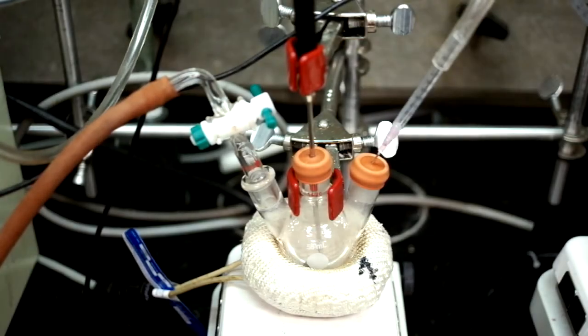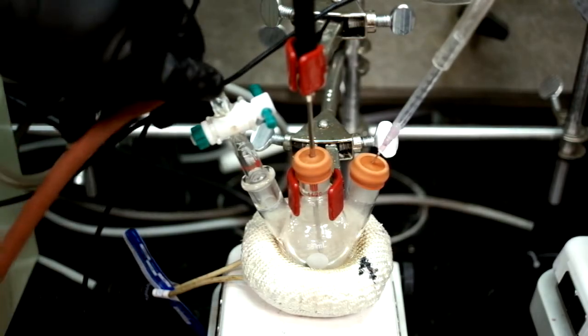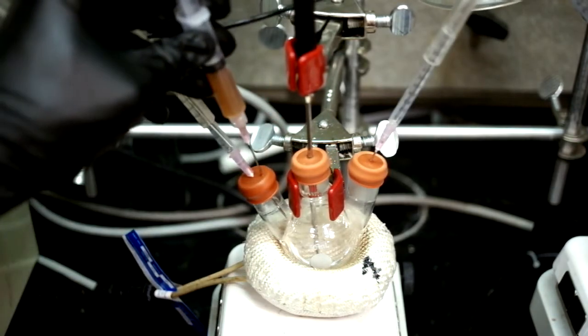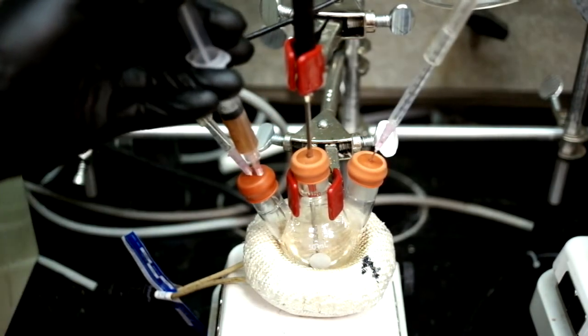After the hour of degassing, the reaction flask will be a clear solution. We can switch it to argon now and add half of the zinc telluride cores from the previous procedure shown in another video.